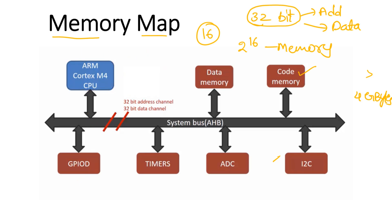After completion of reading, you have to store that data into the data memory. For that, you have to generate an address of the data memory on the address bus. After selecting the memory block of data memory, then you can write that data into the data memory. If you want to read or write data, first you have to select that particular memory block using the address bus, and then you can read and write through the data bus.